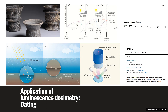Luminescence dosimetry can also be used for dating: dig up material, heat it up, and it emits light based on how much radiation it was exposed to over time, allowing determination of the material's age. However, if a sample was pushed to the surface and exposed to sunlight, all electron traps are emptied and the record is reset. If a sample remained underground long enough, OSL dating works quite well within a range of thousands of years with good precision.